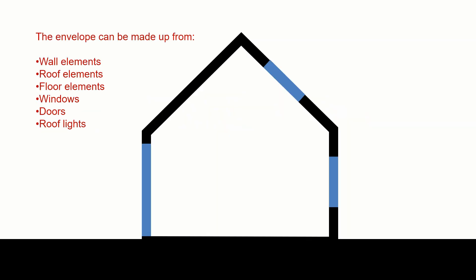When we're talking about the envelope, really it's a system made up of a number of different components. The main components are the obvious ones: the wall, the roof and the floor elements. But we also have to consider penetrations or openings through the envelope and the elements that sit within those openings — so doors, windows and roof lights also have to perform functions within the envelope system.